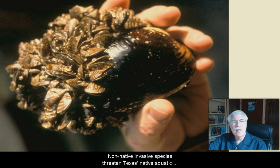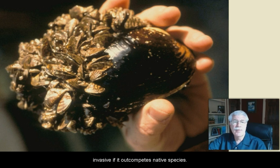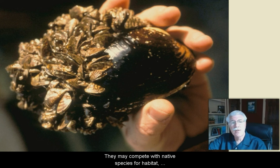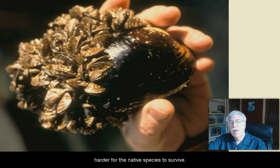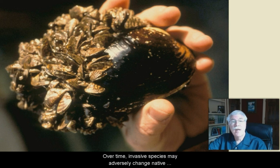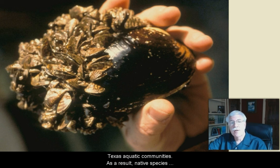A species is considered to be invasive if it out-competes native species. They may compete with native species for habitat, food, or both. This competition makes it harder for the native species to survive, and over time invasive species may adversely change an entire native Texas aquatic community. As a result, native species can become endangered and the invasive species can spread throughout the state.